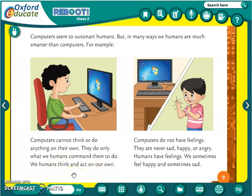A computer can never think anything on its own — it can only do things that humans command it. We sometimes think: tomorrow we will go to a movie, or tomorrow we will go to a garden, or I will go to school soon. These types of things we think on our own, but a computer can never think anything like that.